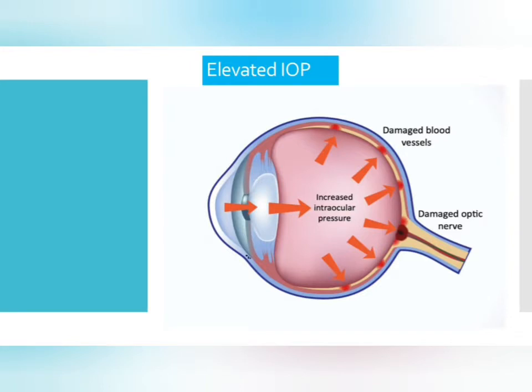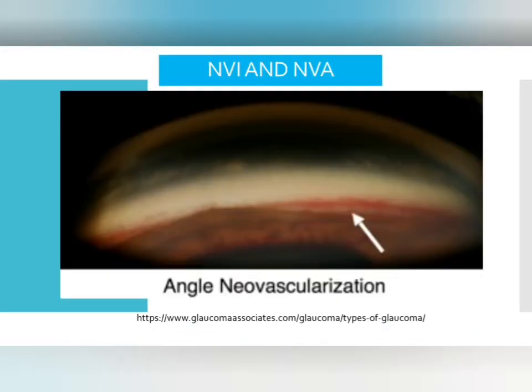For elevated IOP: if during applanation tonometry the patient's IOP is more than 22 mmHg, you have to perform gonioscopy to rule out any angle abnormality — it could be angle closure, neovascularization, or angle pigmentation. To rule out those things, you need to perform gonioscopy.